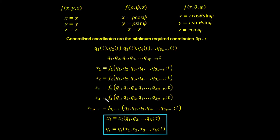Don't worry too much about the mathematics here — all we're going to be interested in is what's at the bottom of this page, and it will be quite simple once we work through it. At the top I've taken a copy of our three coordinate systems: Cartesian, cylindrical, and spherical. In this instance we have a simple system — a point in 3D space represented by three degrees of freedom: x, y, and z.